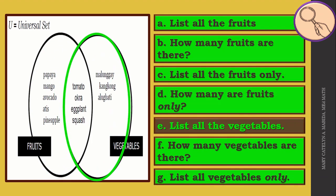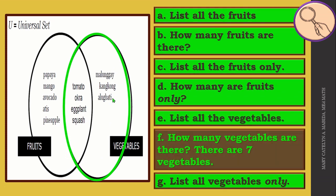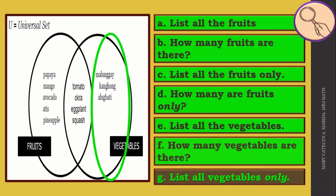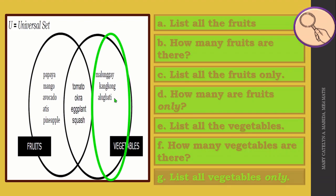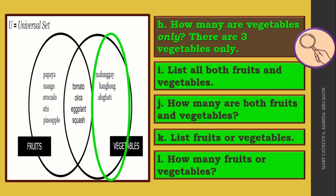This time, list all the vegetables. We have tomato, okra, eggplant, squash, malunggay, kangkong, and alugbati. And how many vegetables are there? There are seven vegetables. List all vegetables only. And that would be malunggay, kangkong, and alugbati. How many are vegetables only? There are three vegetables only.